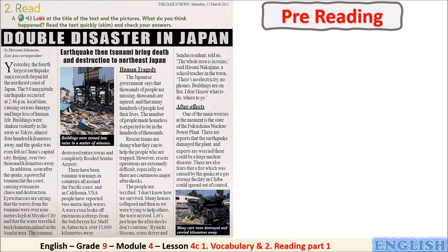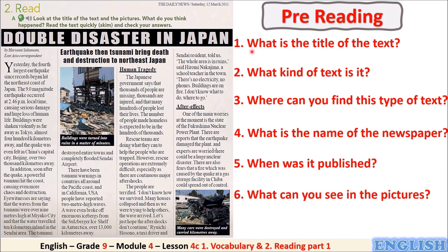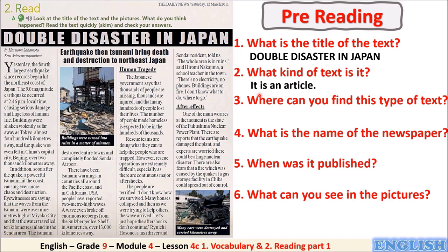Here is the text for our lesson today, with some pre-reading questions. Question one: What is the title of the text? — 'Double Disaster in Japan.' Question two: What kind of text is it? — It is an article. Question three: Where can you find this type of text? — In a newspaper.